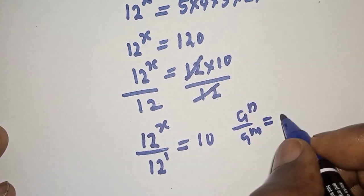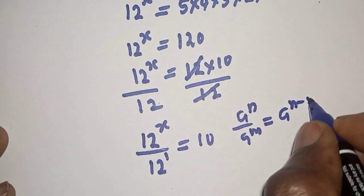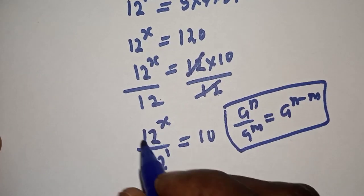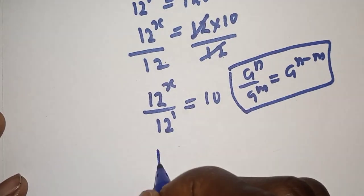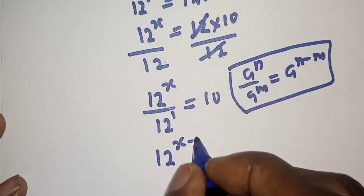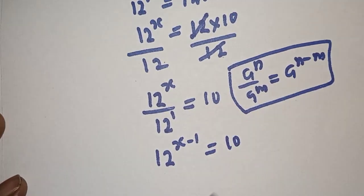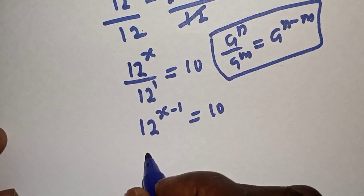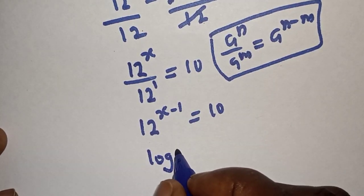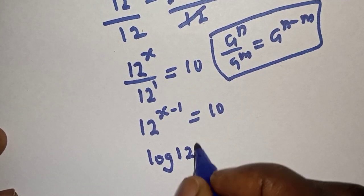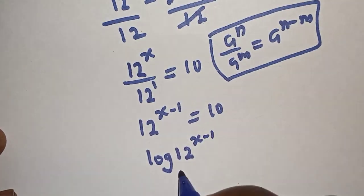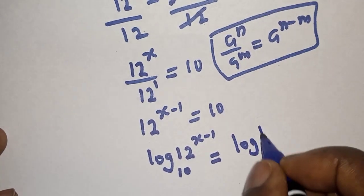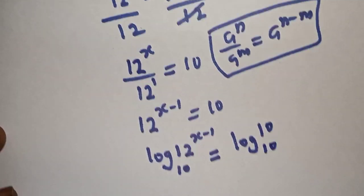Take note: if you have a raised to power n over a raised to power m, this is equal to a raised to power n minus m. So this can be written as 12 raised to power s minus 1 is equal to 10. Let's take the log of both sides: log of 12 raised to power s minus 1, base 10, is equal to log 10 base 10.